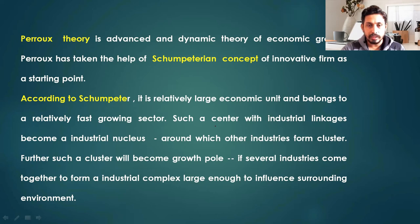There are backward and forward linkages, and if the initial innovative firm has very strong backward and forward linkages, it becomes an industrial nucleus. Around that industrial nucleus, a number of other industries are attracted and clusters form. Such a cluster will become a Growth Pole if several industries come together to form an industrial complex large enough to influence the surrounding environment.